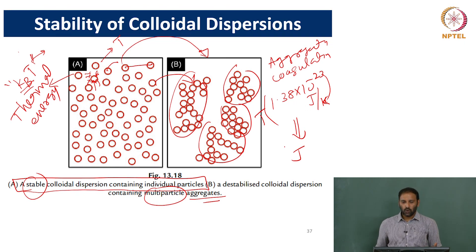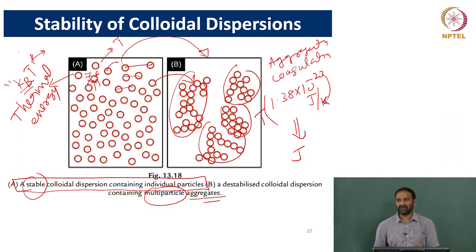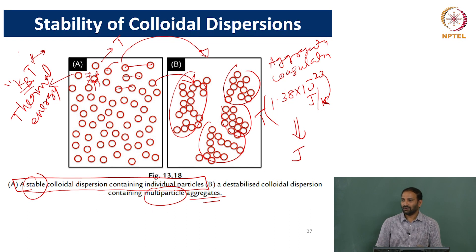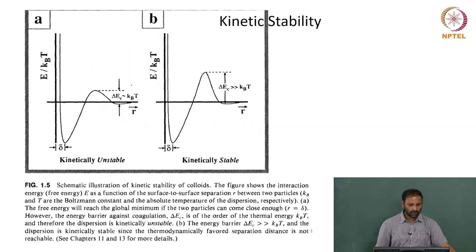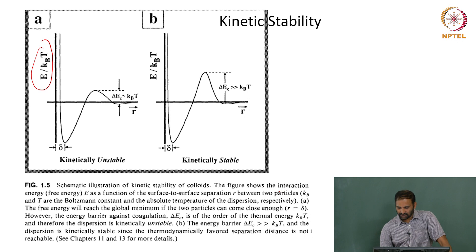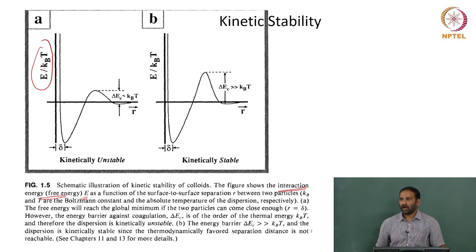The thermal energy kBT will bring particles close to each other through thermal fluctuations. In colloids literature, whenever people talk about interaction energy, you always scale it with kBT. The reason is that interaction energy calculations yield numbers of the order of 10⁻²¹ Joules, so to get a feel for the numbers, you scale the interaction energy with thermal energy — so you can say it is 1 times kBT, 2 times kBT, 10 times kBT, and so on.